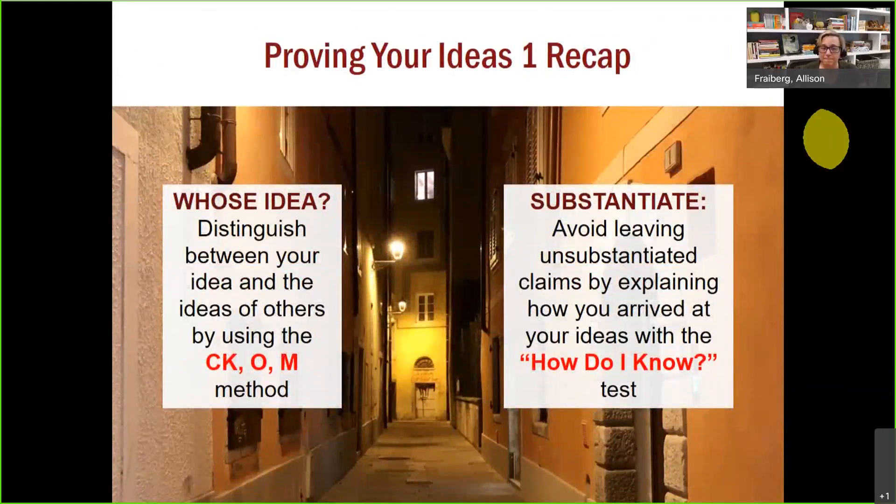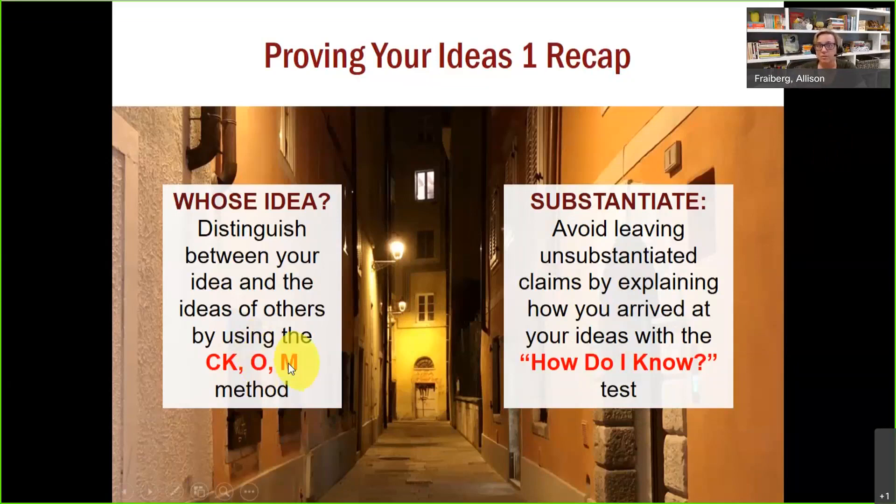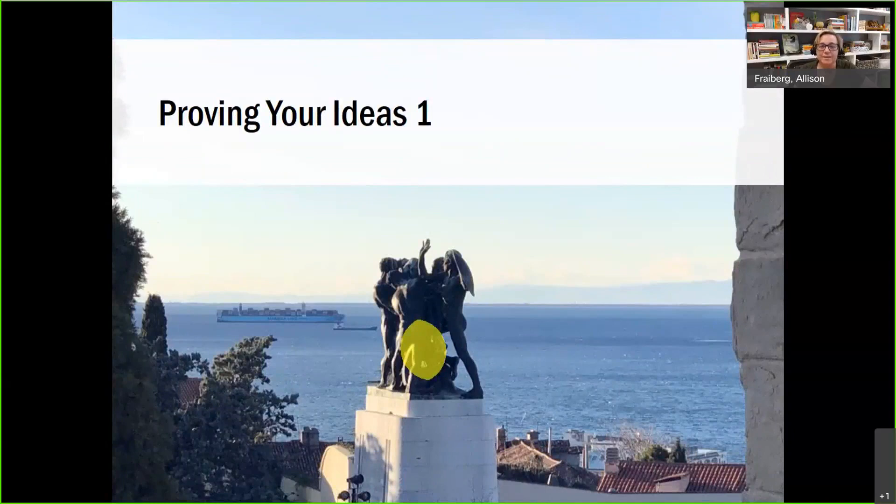All right, so here's our recap. Whose idea? Distinguish between your idea and the ideas of others using the CKOM method. Get yourself a good balance of O's and M's. Find out what your tendencies are in your writing. And to substantiate, use the how do I know test. Either of these ideas, either of these techniques is a great experiment to do on your own writing. And it reveals to you where your unsubstantiated claims are, where your tendencies are in terms of summarizing, in terms of just going on and not engaging with other people's ideas, of relying on common knowledge. This helps you recognize tendencies in your own writing. And that is proving your ideas lecture one. I'll see you for the next lecture.